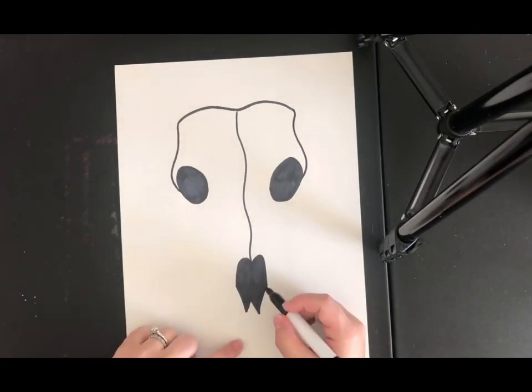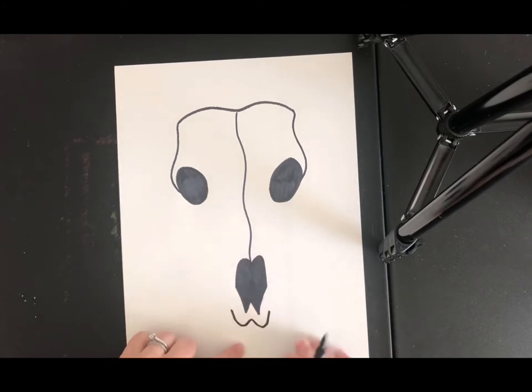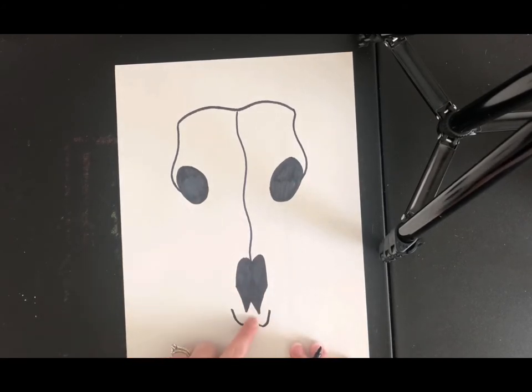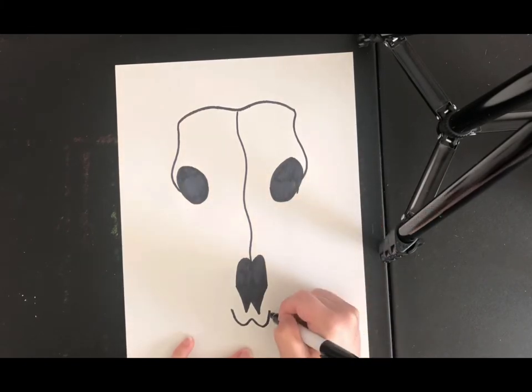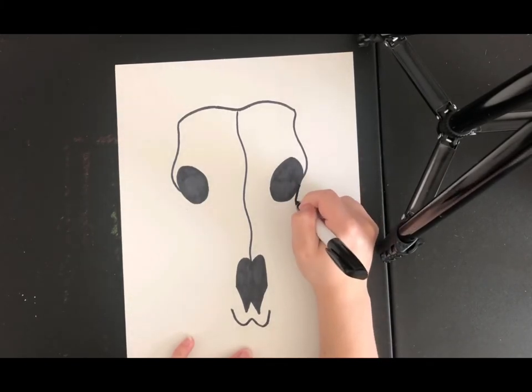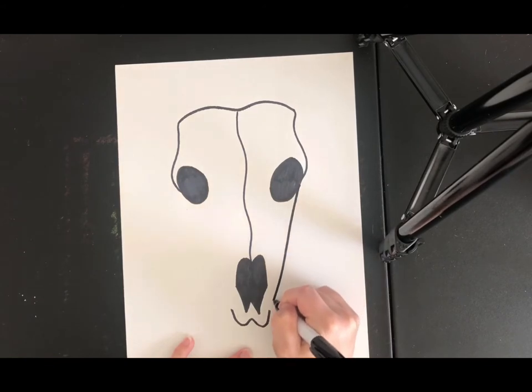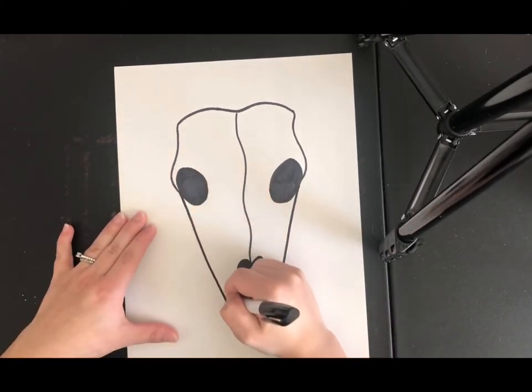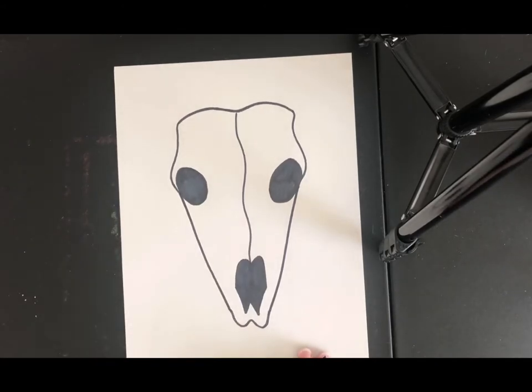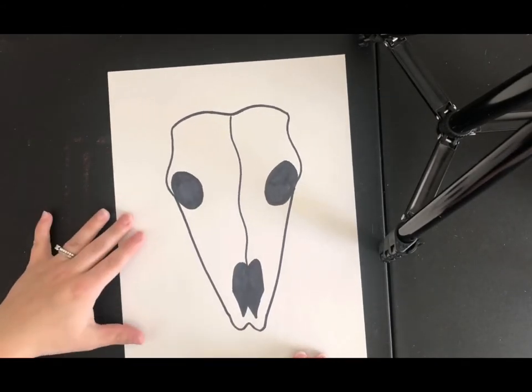Down here you're going to create a curve that kind of follows your W but then you're going to connect the bottom of your eye to that W like this and do the same thing on this side. So this is making it so our skull is starting to take shape.